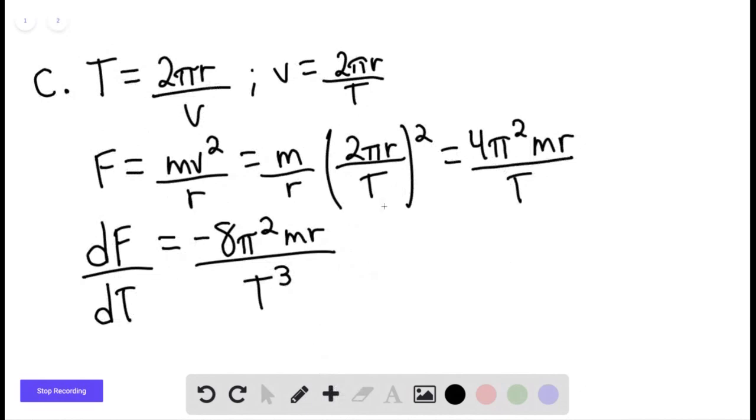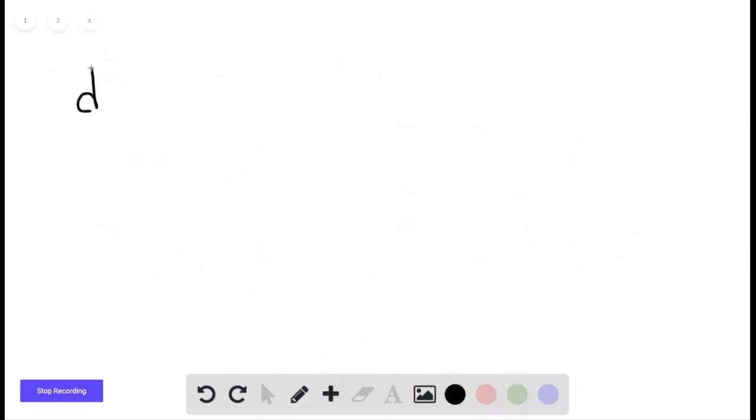This would be df equals negative 8pi squared times m r divided by t cubed times dt. Here we can say then that df would be equal to negative 8pi squared times m r multiplied by v over 2pi r, substituting in for 1 over the period,